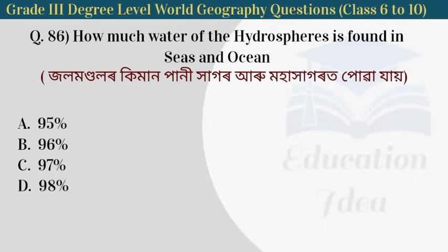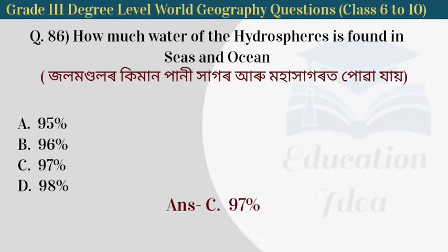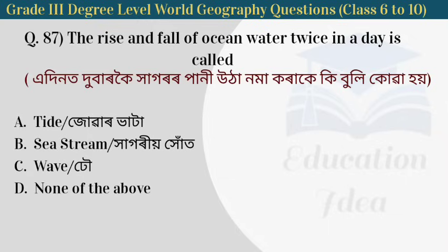Next question: how much water of the hydrosphere is found in seas and oceans? Next question: the rise and fall of ocean water twice in a day is called tides.